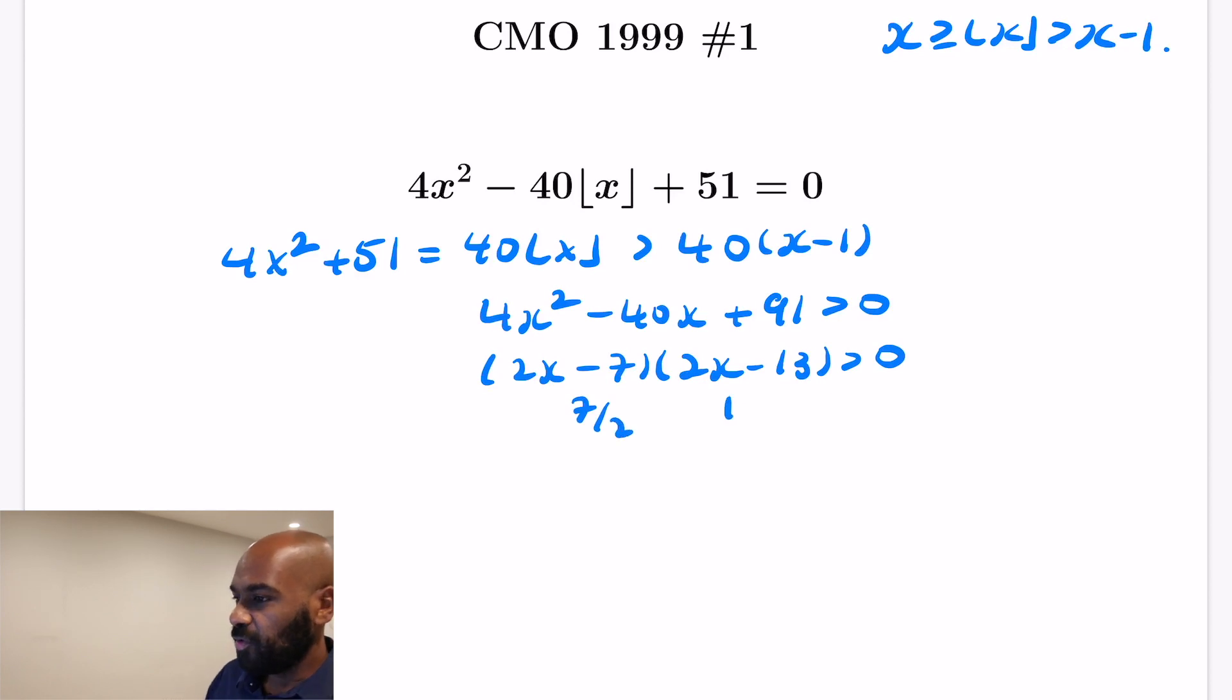And that's satisfied if we look at where the factors are 0, that's 7/2 or 13/2. So this strict inequality is satisfied for values of x that are strictly less than 7/2, which makes both factors negative, and when x is strictly greater than 13/2, which makes both factors positive.